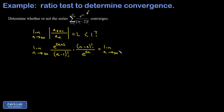Now we reach into our standard bag of tricks for exponentials and factorials. For the exponential piece, we look for a cancellation between numerator and denominator. I'm going to split off an e squared from the numerator and write it as e squared times e to the 2n. The factorial piece in the numerator we leave alone.